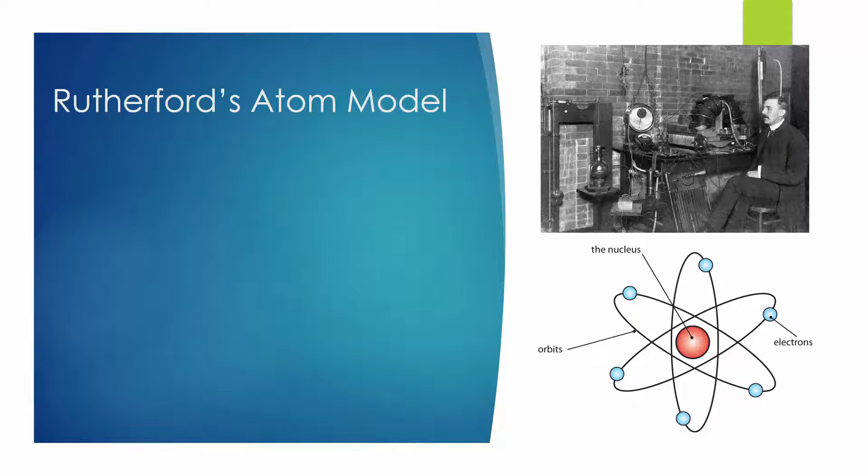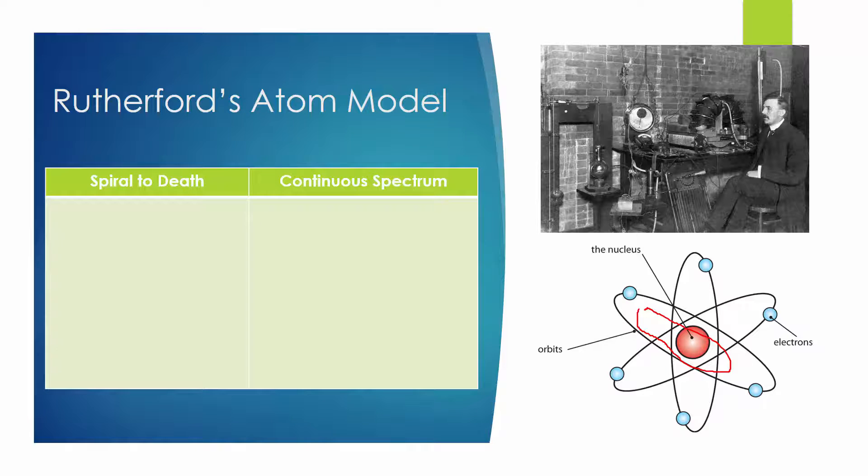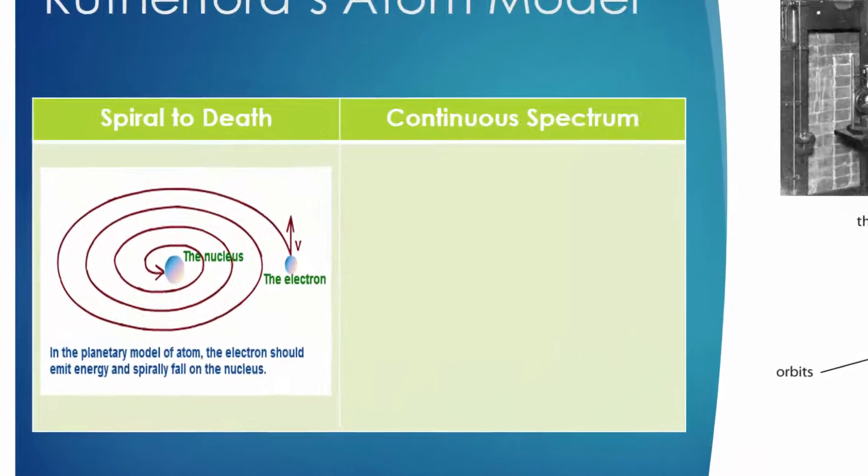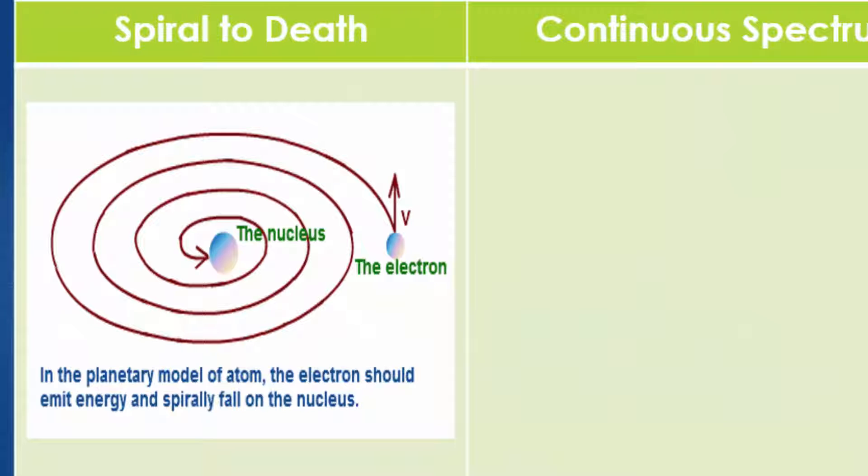However, this model had two serious flaws. The first problem is called the spiral-to-death problem. According to Maxwell's equations, electromagnetic power is radiated away by a charged particle moving with an acceleration. In Rutherford's atom model, since electrons are in circular motion, which is a type of acceleration, electrons should radiate electromagnetic waves and repeatedly lose their energy and drop into the nucleus in a spiral orbit. But this is obviously not true.